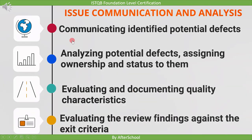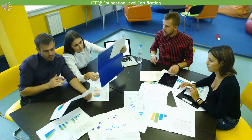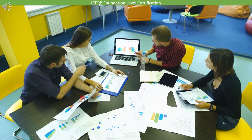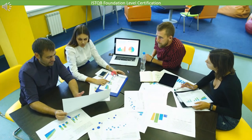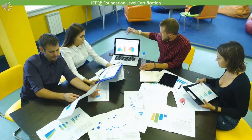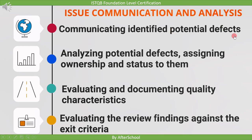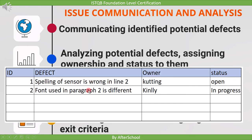After performing the review on the work product, we move to issue communication and analysis. In this stage, we communicate identified potential defects to the team member. The reviewer, after completing the review, calls a meeting where all stakeholders of the product are present, and communicates the potential defects. Note the word 'potential defects' — found defects are called potential because they are not yet finalized; they will be finalized after analysis. After analysis, we confirm or reject the defect. After confirming, we assign the owner of the defect so it can be fixed, and assign a status such as open, in progress, or closed.